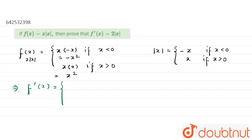If you differentiate it, it will be minus 2x if x less than 0, and 2x if x greater than 0. Now, convert it into mod. This is 2 mod x.